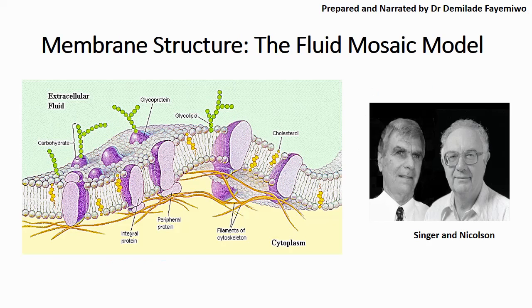When we discuss the cell membrane, we use a model called the fluid mosaic model. This fluid mosaic model was discovered by two men, Singer and Nicholson, whose pictures are on the slide. What they discovered is that when you look at the cell membrane, you would see that there are proteins scattered around it. The cell membrane itself is not a solid structure — it has more of an oily consistency, and the proteins scattered around it make it look like a mosaic, especially if you look at it from the top.